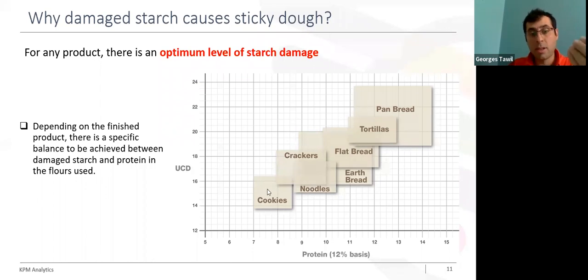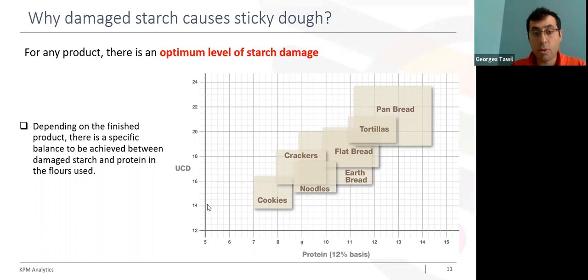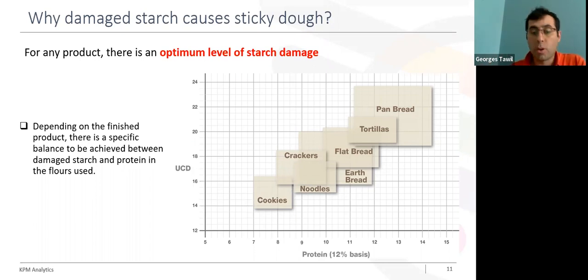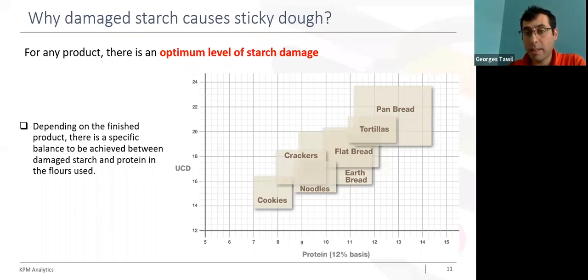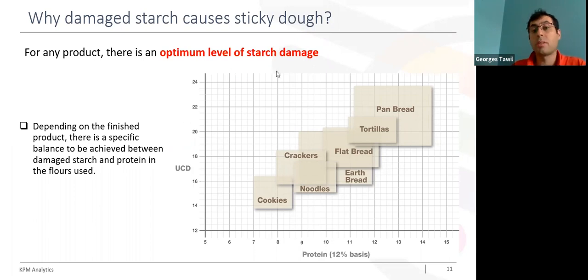For example, if you are a cookie manufacturer, you may require flour containing a relatively low amount of starch damage — approximately between 14 to 16 UCD — and at the same time, this flour requires relatively low protein content, between 7 to 8 percent. Compare this to pan bread, where production requires flour with a relatively high amount of starch damage — between 20 to 24 UCD — and higher protein content, between 12 to 14 percent.